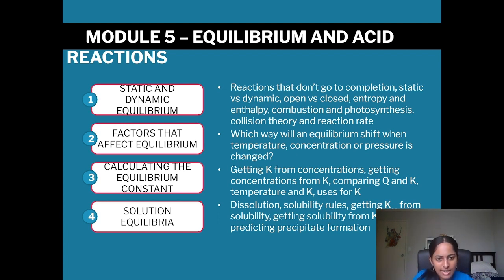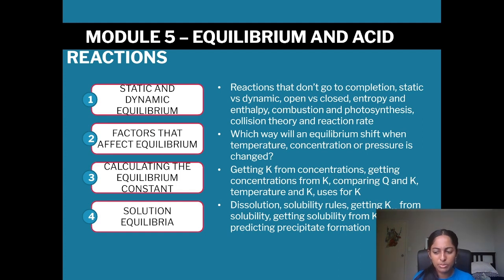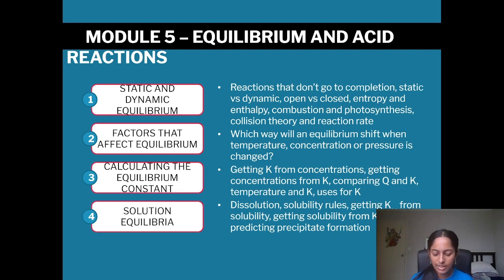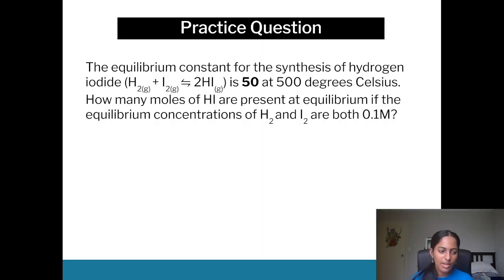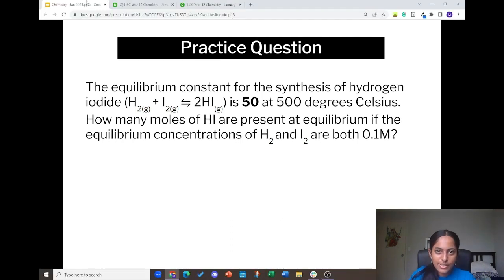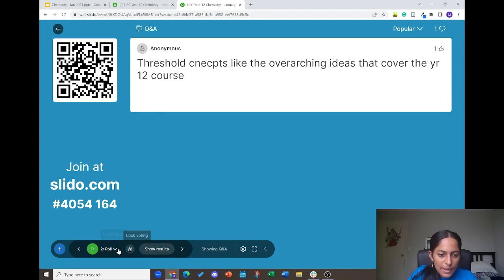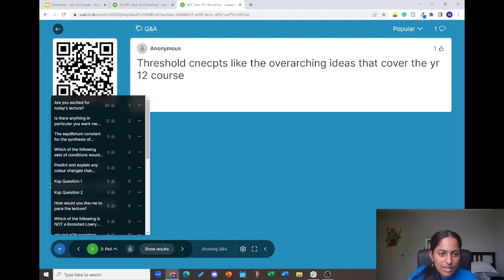In terms of Module 5, there are four main parts: static and dynamic equilibrium, factors that affect equilibrium, calculating the equilibrium constant KEQ, and then branching off, KSP which is also solubility equilibria. The concept is similar for both KEQ and KSP, but the difficulty comes in the wording of questions. I have a practice question for you — have a go, I'll give you around two to three minutes.